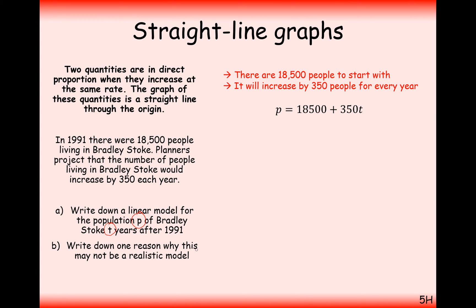Part b is to write down one reason why this model may not be realistic. And the reason here is that population is generally not a linear model. Population does not increase at a linear rate. More people will equal faster growth. So, this model is not realistic.